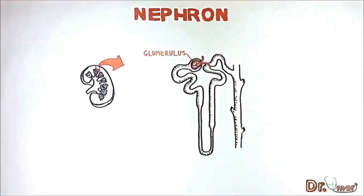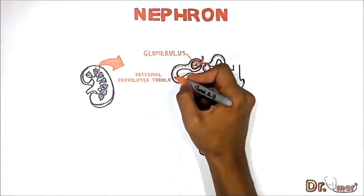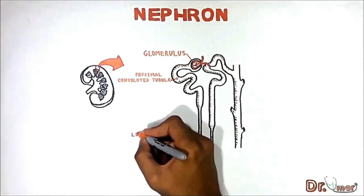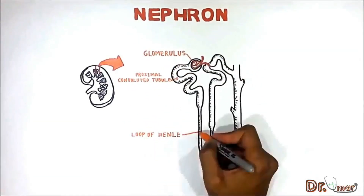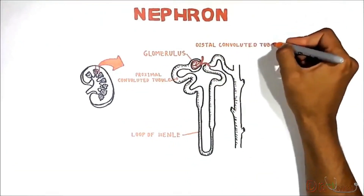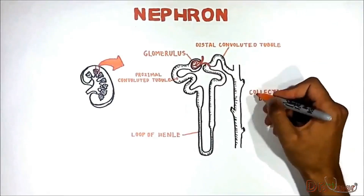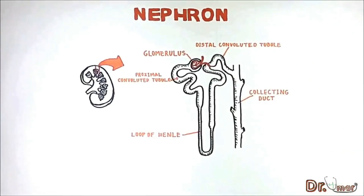The components of a nephron are: the glomerulus, the proximal convoluted tubule, the loop of Henle, the distal convoluted tubule, and the collecting ducts.